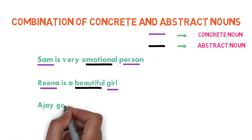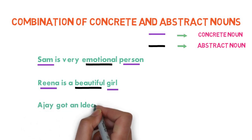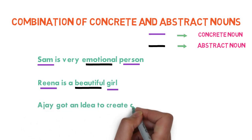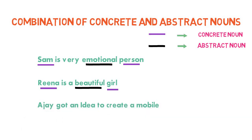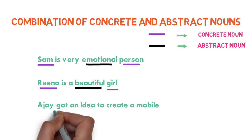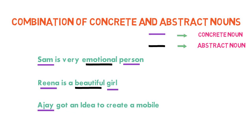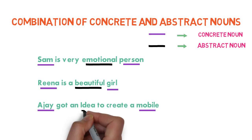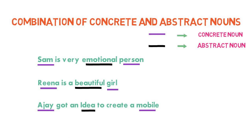Now let's see a combination of both kinds of nouns — concrete noun and abstract noun. Sam is a very emotional person — here Sam and person are concrete nouns and emotional is an abstract noun. Rina is a beautiful girl — here Rina and girl are concrete nouns while beautiful is an abstract noun. Ajay got an idea to create a mobile — here Ajay and mobile are concrete nouns while idea is an abstract noun.